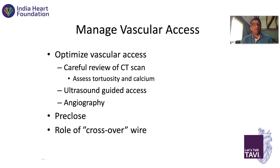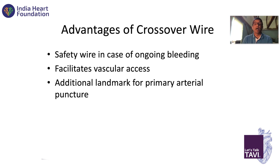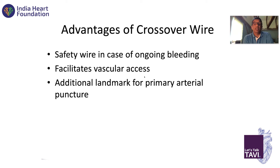For optimal vascular access, we've discussed the components: carefully review the CT, ultrasound-guided access, and angiography. Let's talk about pre-close and the crossover wire. Early on, I think everybody should do a crossover wire. What we mean by a crossover wire is: if your large sheath is on the right side, when you get the sheath on the left side, you cross over with an 014 wire from the left femoral artery into the right SFA. It allows you to manage complications — I'll show you examples of how we do that.